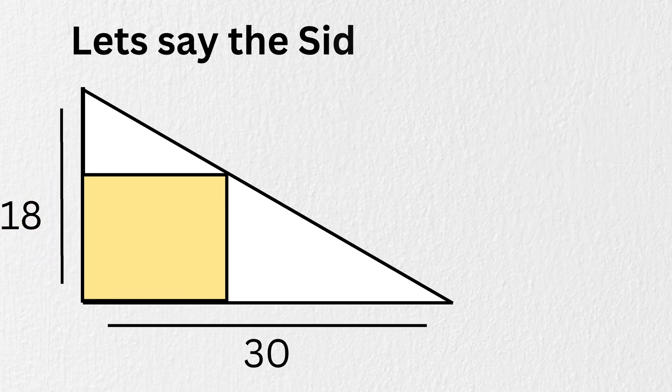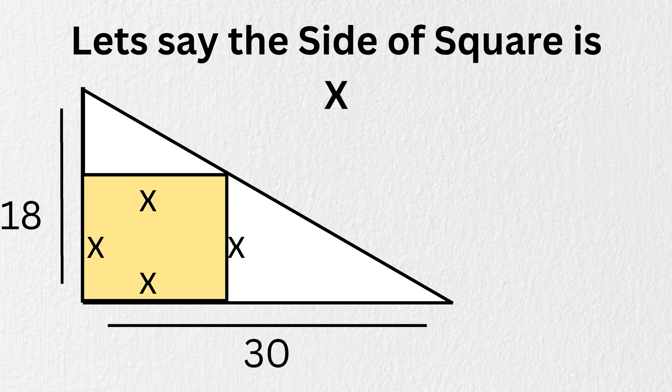Let's say the side length of the square is x. That means, from the top of the triangle, down vertical segment measures 18 minus x, and this horizontal segment measures 30 minus x.